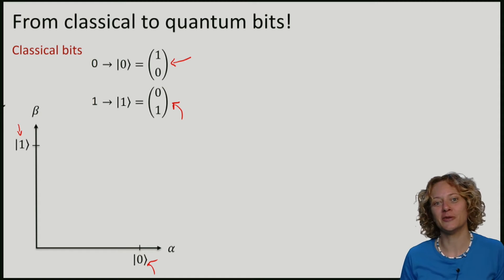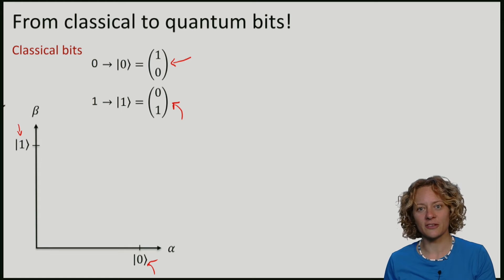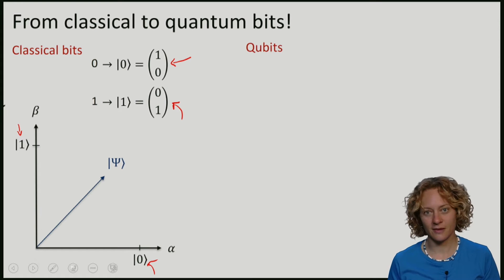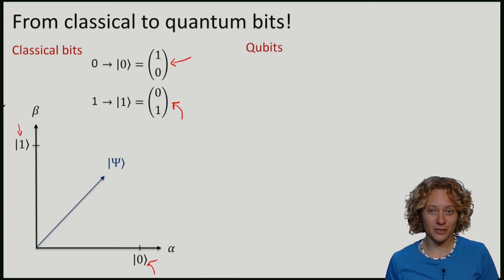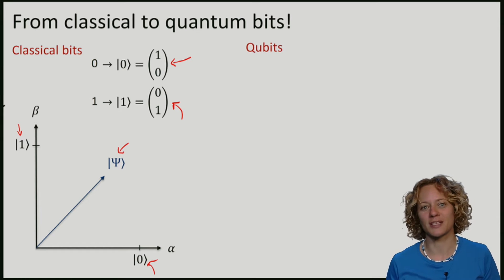So how about these qubits? If I draw these bits as vectors, it is now somehow intuitive that we may not just have orthogonal vectors, but we may also consider a vector in the middle. This funny notation is how people in quantum information like to write vectors.